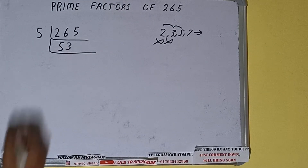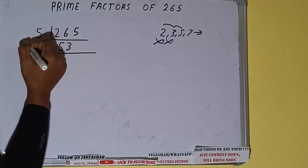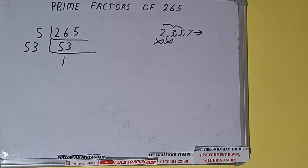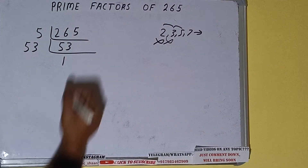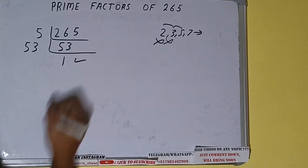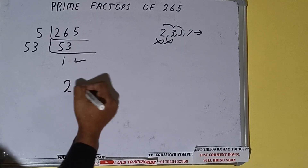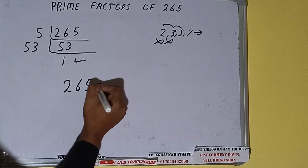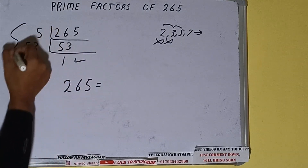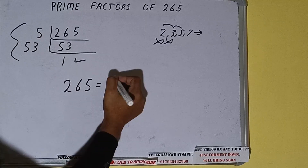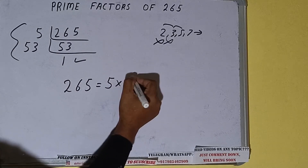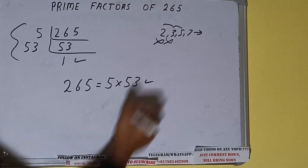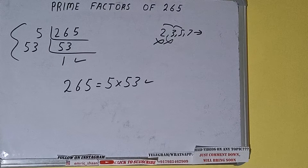Now 53 is further not divisible by 5, and 53 is also a prime number, so it is only divisible by itself, that is 53. Once we do so, we'll be getting 1. Once we get 1, we need to stop. The prime factors of 265 will be whatever we have on the left-hand side, that is 5 × 53. That will be the answer.